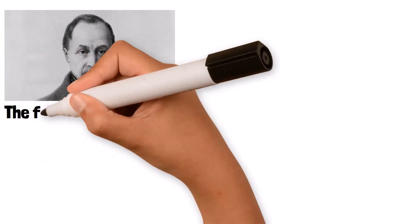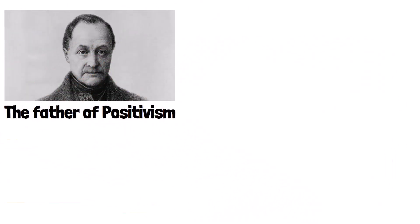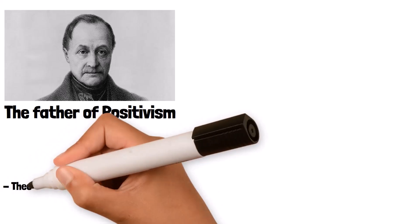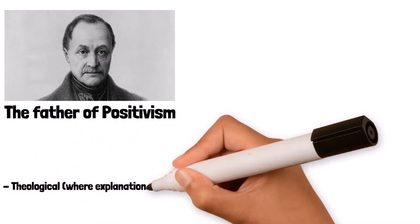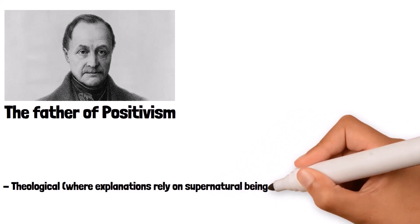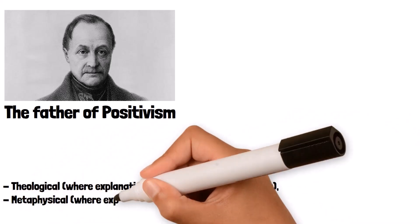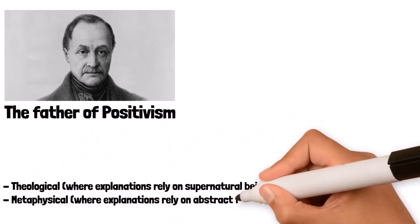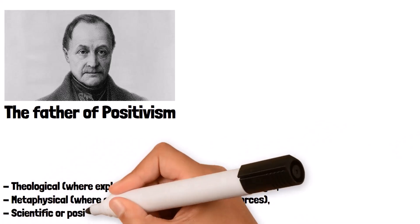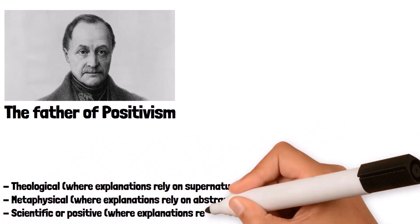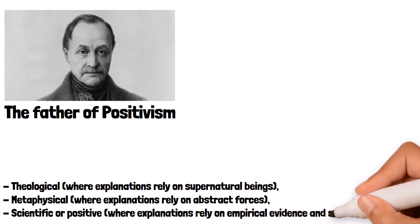Kahn, often regarded as the father of positivism, proposed that human understanding progresses through three stages: theological, where explanations rely on supernatural beings; metaphysical, where explanations rely on abstract forces; and finally, scientific or positive, where explanations rely on empirical evidence and scientific reasoning.